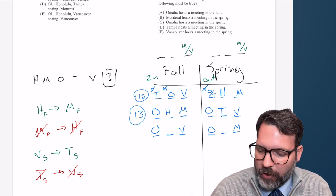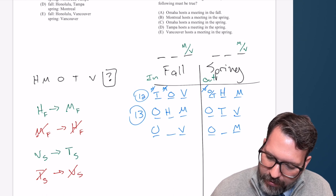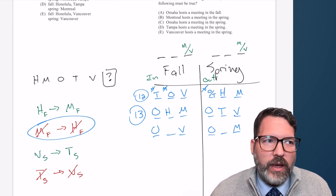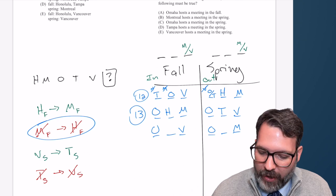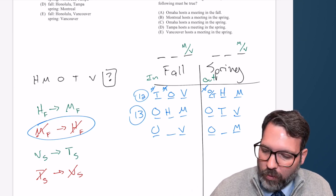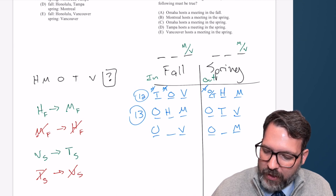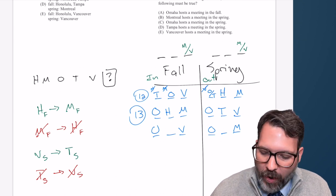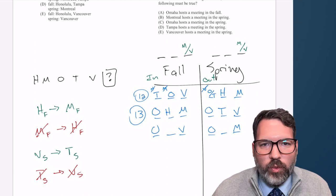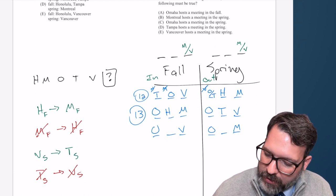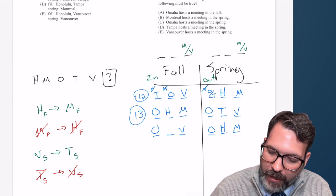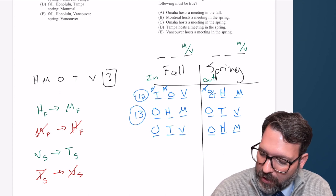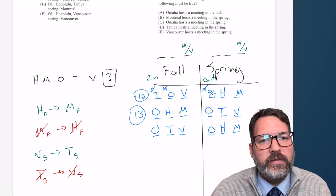In the other scenario, we can activate the rules. To say M is not in the fall — well, M is in the spring, and so from the contrapositive, H cannot be in the fall, which means H is in the spring as well, and T ends up in the other slot. So basically the only thing we're deciding is where this H, M, T, V block ends up going.